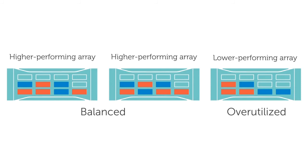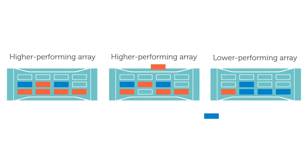It will initiate the same sort of swap that we saw in the last example, until more of the hot data is back on the higher-performing arrays and more of the cold data is on the lower-performing array, until all the latencies are balanced.